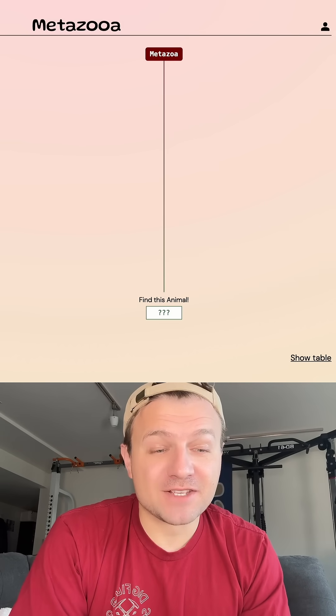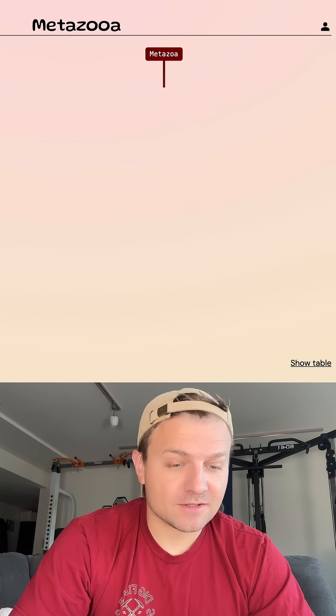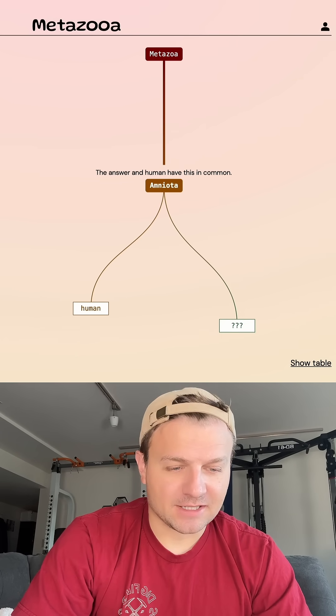Let's see how long it takes me to guess the species on Metazooa today. It is day 826 and like always we're going to start out with humans. The grouping here is amniotes and whenever that happens I like to go with a bird.